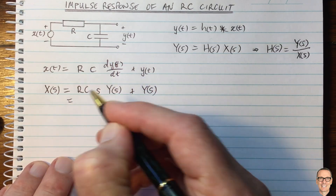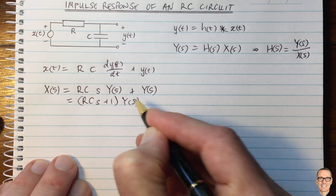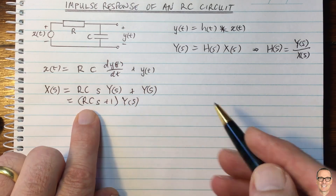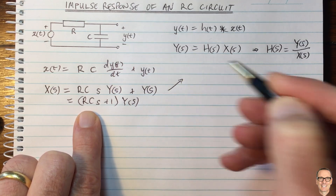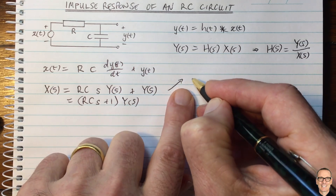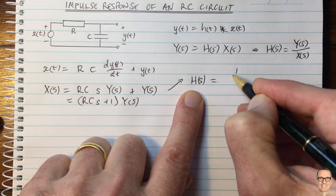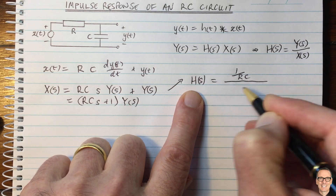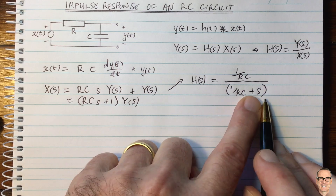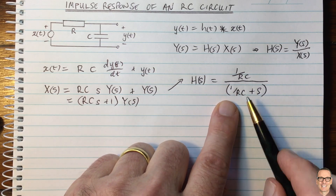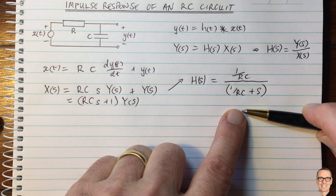This equals (RC·S + 1) times Y(S). Dividing everything through by RC, we get H(S) for this circuit equals (1/RC) divided by (1/RC + S). This is now in the standard form of a Laplace transform, so we can look up inverse Laplace transform tables to find the inverse.